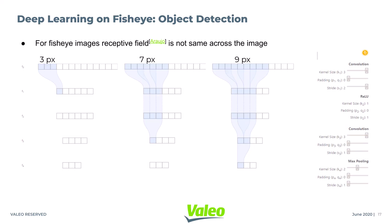Similarly, in a regular image, the receptive field is the same across the image with respect to a layer. But in a fisheye image, the receptive field changes as we move away from the center of the image, breaking the translation invariance in CNNs. As a result, the same object with different translations may not get detected in a fisheye image.